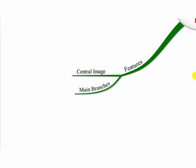These main branches are the key themes relating to the central topic. So for example, if you had a central theme of farm, you might have key themes like people, animals, crops, vehicles, and so on.